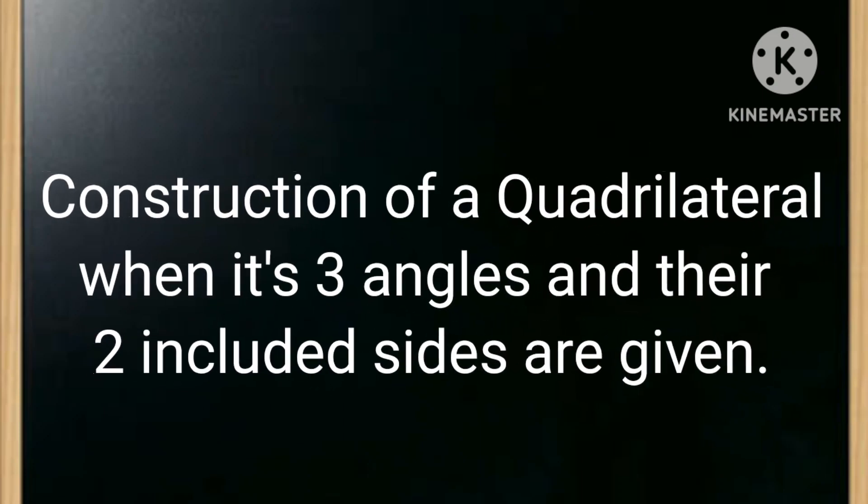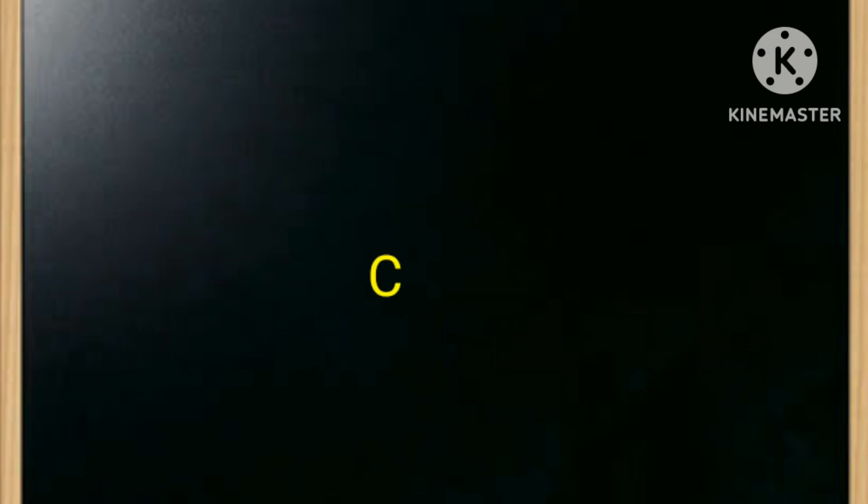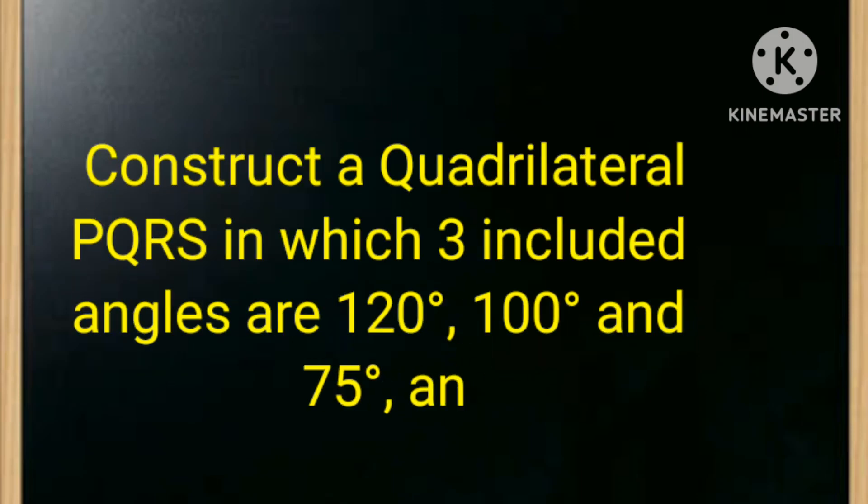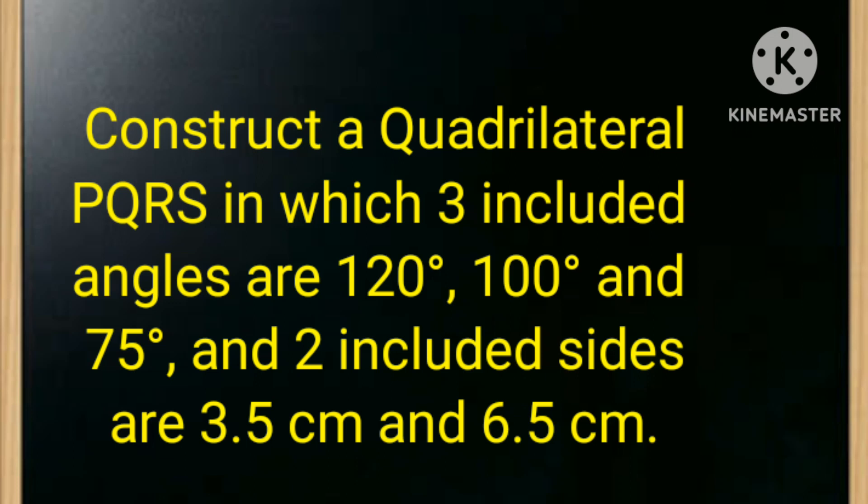Our second construction is construction of a quadrilateral when its three angles and their two included sides are given. Now let's see the condition here. Construct a quadrilateral PQRS in which three included angles are 120 degrees, 100 degrees and 75 degrees, and two included sides are 3.5 cm and 6.5 cm. So let's see how to construct it.